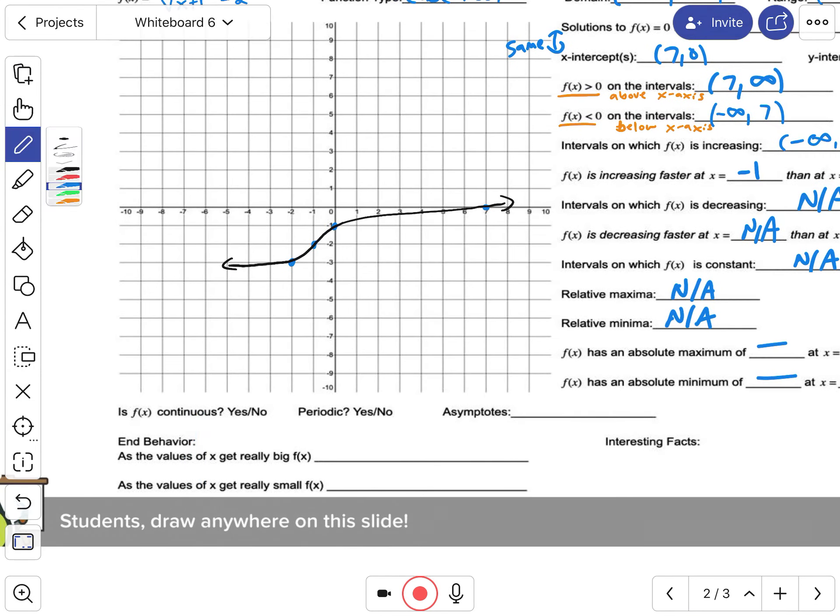Continuous. So continuous—the opposite of continuous is discrete. Discrete are dotted lines or a broken-up type of graph. But this graph is not broken up or dotted, so it's not discrete. It is continuous.